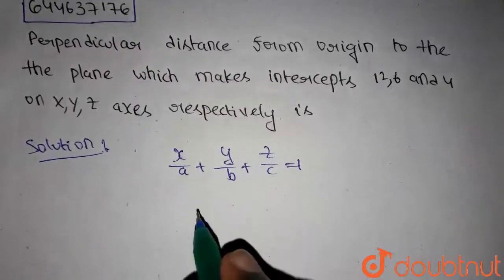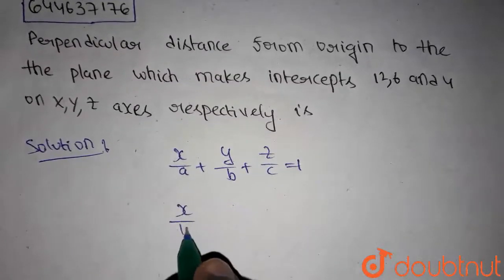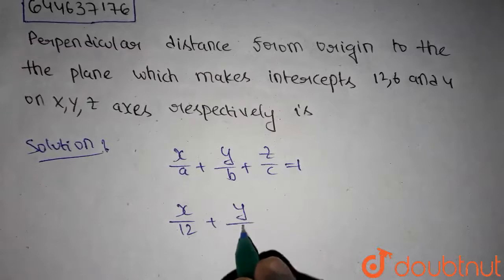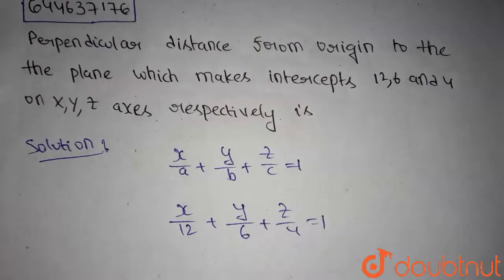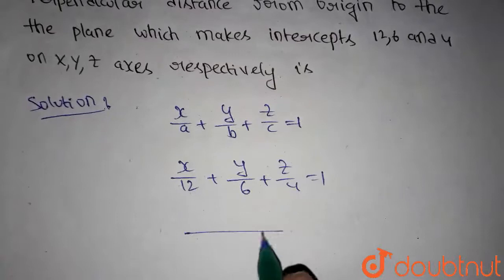So substitute these values here to get the plane equation. We get x/12 + y/6 + z/4 = 1. If we take the LCM, we get 12.